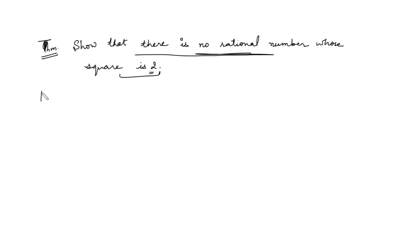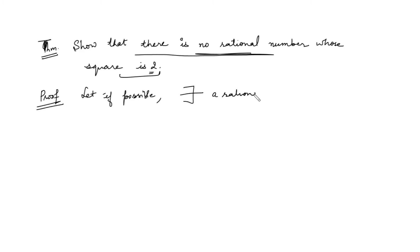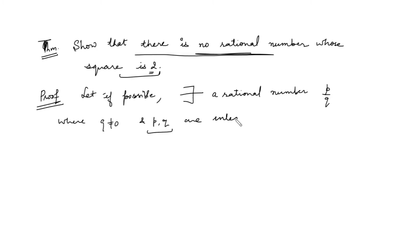We will prove it by the contradiction method. What does the contradiction method say? We will assume that it is a rational number. We will assume that there exists a rational number whose square is 2. So let, if possible, there exists — this is the symbol for 'there exists' — a rational number P by Q, where Q is non-zero.